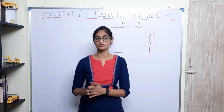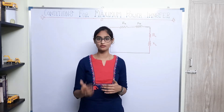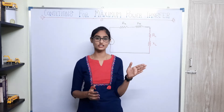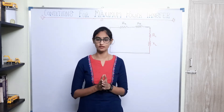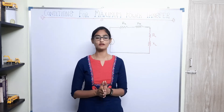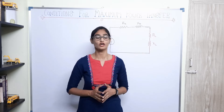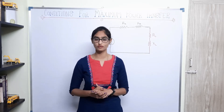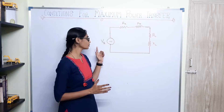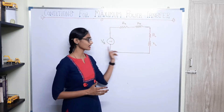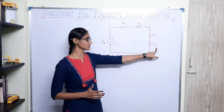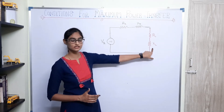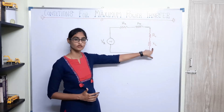In the previous video, we saw the maximum power transfer theorem, which states that when the source's internal resistance and the load's resistance are the same, maximum power will be transferred to that load. We saw some examples and solved a problem using this theorem. Now, when you have an AC network with impedance and resistance, how should the impedance be adjusted to get maximum power transfer?